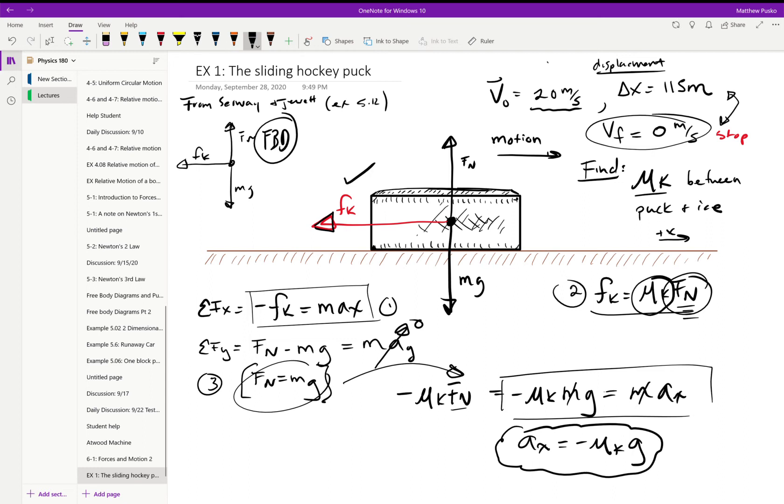The negative sign is slowing us down. Alright, we're not done. We want to know it went 115 meters and it had an initial velocity of 20 meters per second and a v final of zero meters per second.